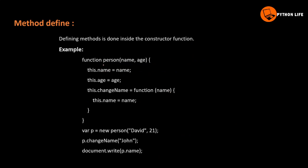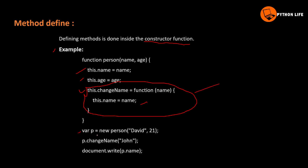So let's see how the method definition is done. The method definition is done inside the constructor function. For example: function person(name, age) — this.name = name, this.age = age, this.changeName = function(name) { this.name = name; }. This is the method. The object is declared using new person().